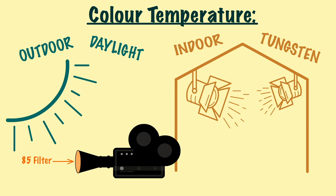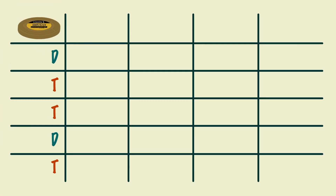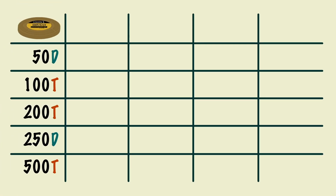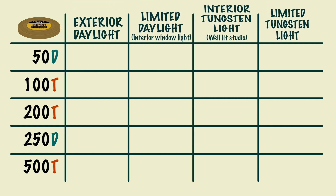This filter will balance tungsten stock for a daylight setting, so you don't have to have two types of film stock and don't lose time loading a new roll of film. You'll want to base both the colour temperature and the exposure index you choose on how you want to light the scene.